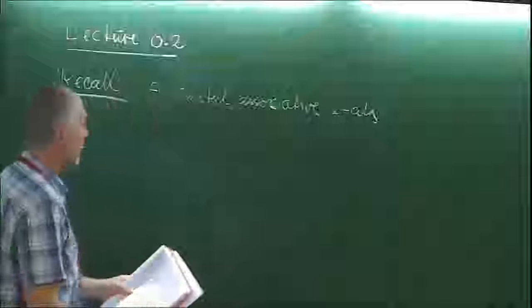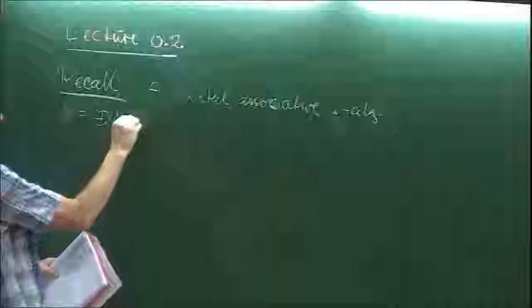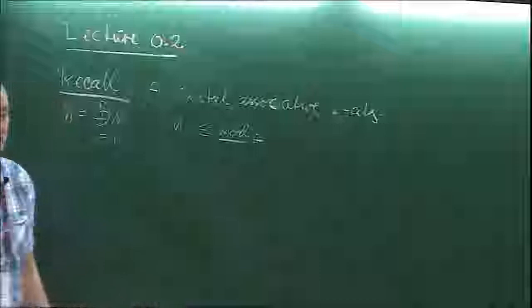We had the right A-modules, so M is equal to the direct sum of M_i for i from 1 to r. M_i is a right A-module, so it is in mod A on the right side — it is a right A-module.